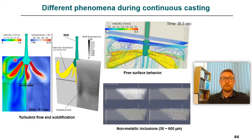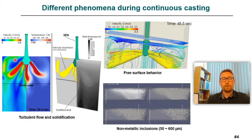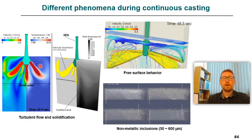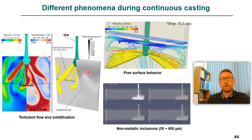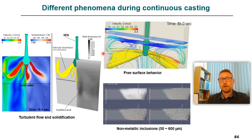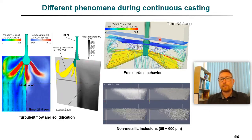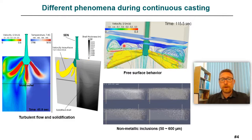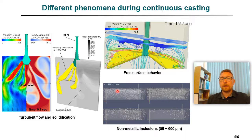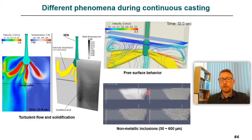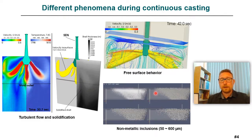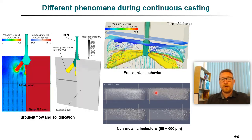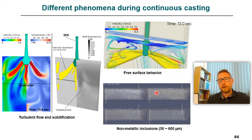The continuous casting process is a combination of complex multi-phase phenomena such as turbulent flow, heat transfer, formation of the solid shell, behavior of the free surface and possible slag entrainment, and complex motion of non-metallic inclusions and gas bubbles which can vary from size of several micrometers up to several millimeters.